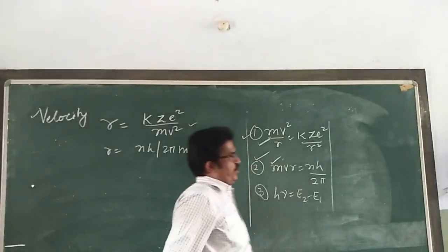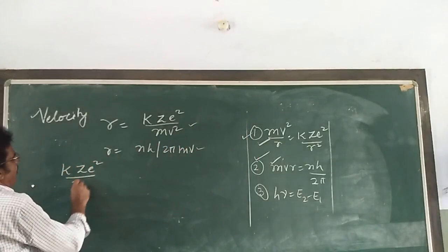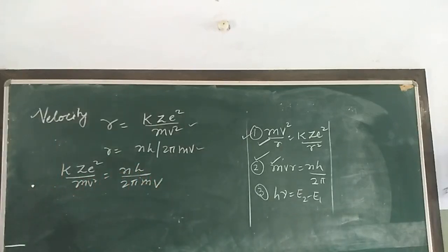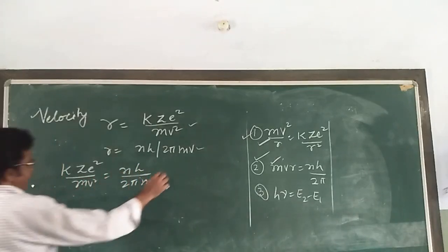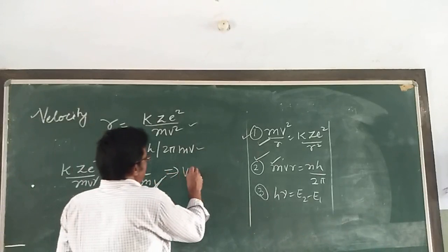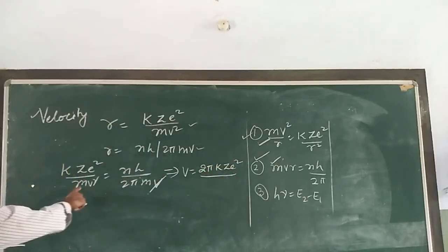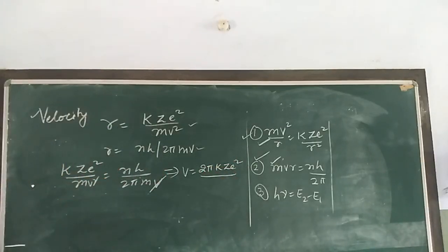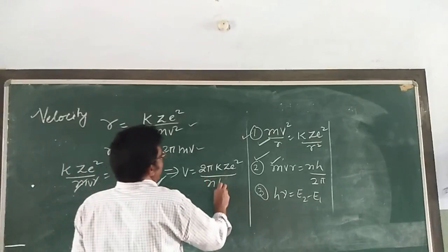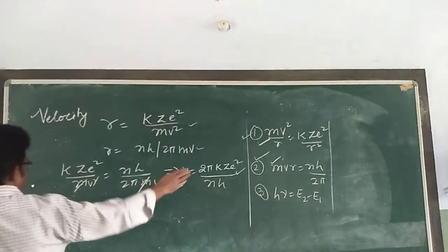Using assumptions 1 and 2 together to eliminate r, v comes out to be v = 2πkze²/(nH). This is the formula for velocity of the electron in Bohr's stationary orbit.